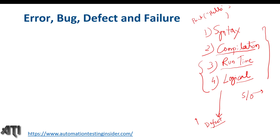This is all about error. Now, if you talk about bug and defect, these two terms are used interchangeably in software testing. Somewhere we use 'bug' and somewhere 'defect' — it depends on the company, the project, and the tool being used.